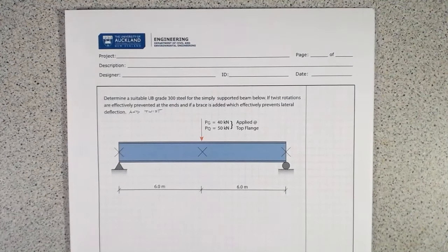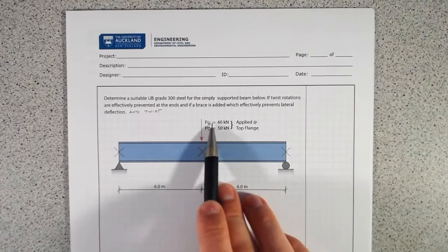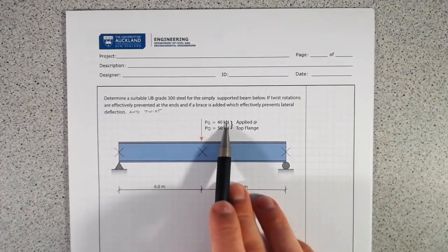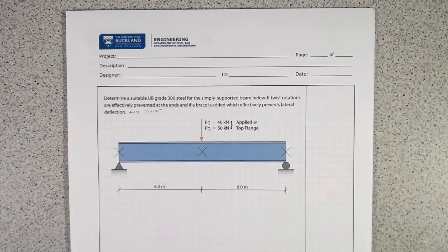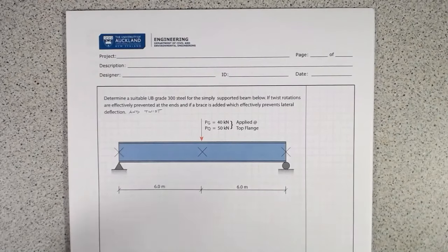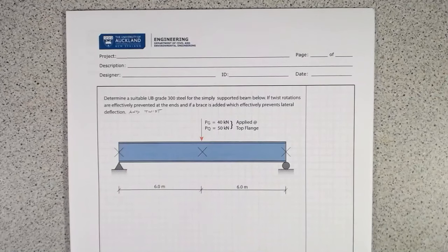The load applied is a permanent (dead) load of 400 kilonewtons and an imposed (live) load of 50 kilonewtons, applied at the top flange at mid-span. We need to determine our moment demand on the section and member, pick a UB with a large enough section to resist that demand, then check that the segment between points of restraint isn't going to undergo lateral torsional buckling before we reach that section capacity.